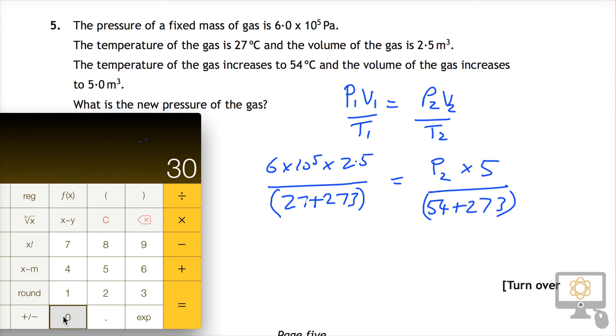I'll just press equals at this point. I'm going to divide that by this number. Well, 27 plus 273 is 300, so divide it by 300, equals that.